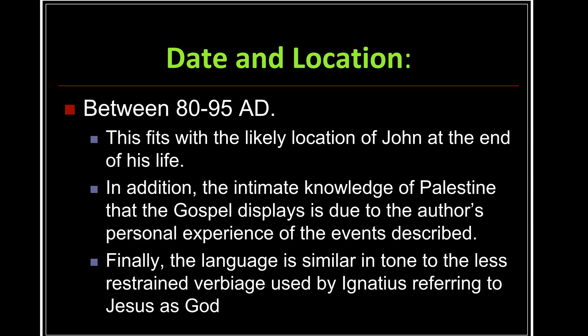As we look at the date and location, although still debated, the traditional view puts the writing of John's gospel in Ephesus between 80 and 95 AD. This fits with the likely location of John at the end of his life. In addition, the intimate knowledge of Palestine that the gospel displays is due to the author's personal experience of the events described. Finally, the language is similar in tone to the less restrained verbiage used by Ignatius referring to Jesus as God.